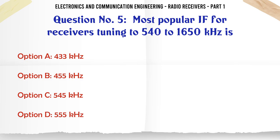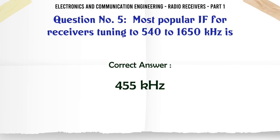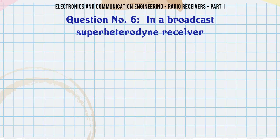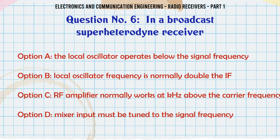Most popular IF for receivers tuning to 540 to 1650 kHz is: a. 433 kHz. b. 455 kHz. c. 545 kHz. d. 555 kHz. The correct answer is 455 kHz.